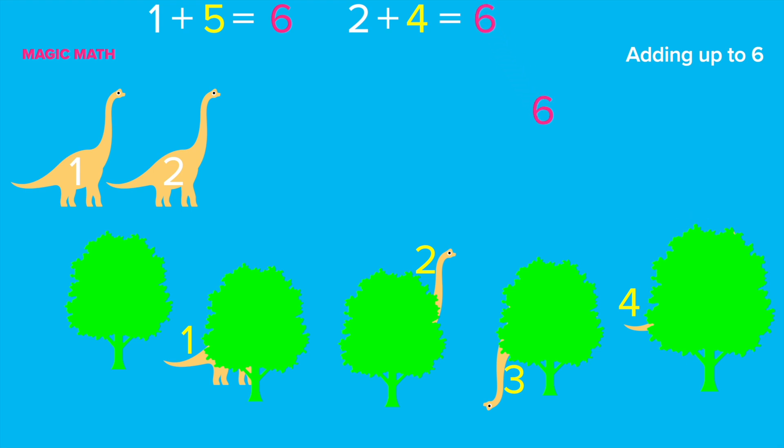Do you see the dinosaurs with his feet out? Great! You found it! How many dinosaurs have we found? 3! Right! And how many dinosaurs are still hidden behind the trees? 3! Let's count. 1, 2, and 3. Well done! So, 3 plus 3 equals 6.